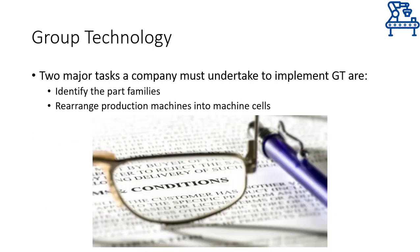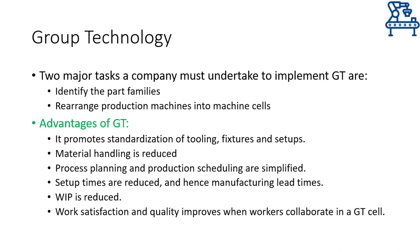Of course, if these two conditions are to be met, certain tasks have to be performed by the company. Simply put, the part families must be identified, and machines should be rearranged on the factory floor so that a machine cell is formed. If a company is willing to do this, all the advantages of group technology may be enjoyed. Apart from reduced manufacturing lead time, reduced work in progress and work part setup time is also achieved. Moreover, material handling is greatly reduced as the work unit does not have to leave the machine cell.